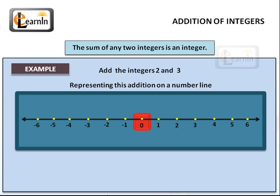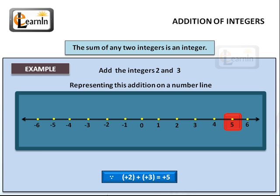Say we want to add integers 2 and 3. Representing this addition on a number line, to add 2 to 3, first we identify 2 on the number line — that's 2 spaces to the right from 0. To add 3 to this integer, we have to move 3 spaces to the right of 2 on the number line. If we move 3 spaces to the right of 2, it takes us to 5. So we can say that 2 plus 3 is equal to 5. In mathematical expression, this would be expressed as (+2) + (+3) = +5. The plus is just there to indicate that we're moving in the positive direction, to the right.